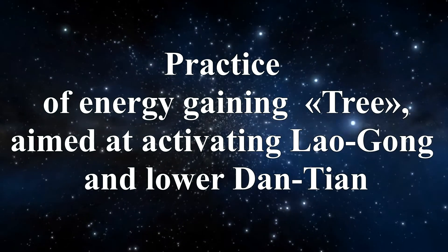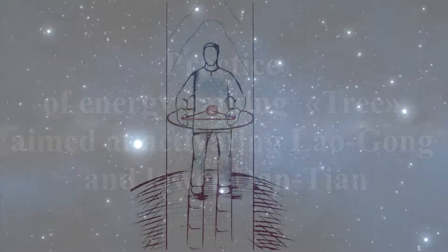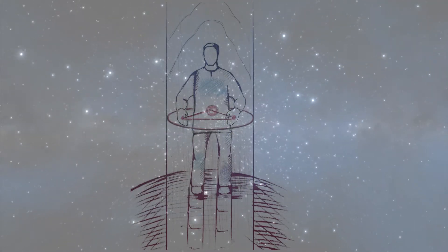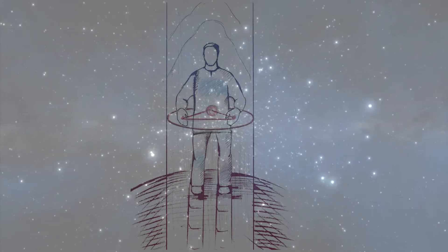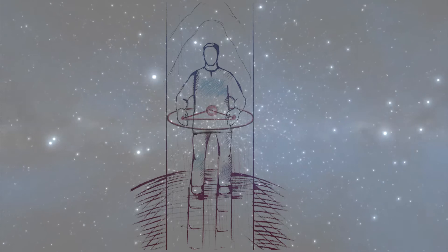Practice of energy gaining tree, aimed at activating laogong and lower dantian. Main position: standing, legs ready. The tip of the tongue rests against the palate just behind the upper teeth.